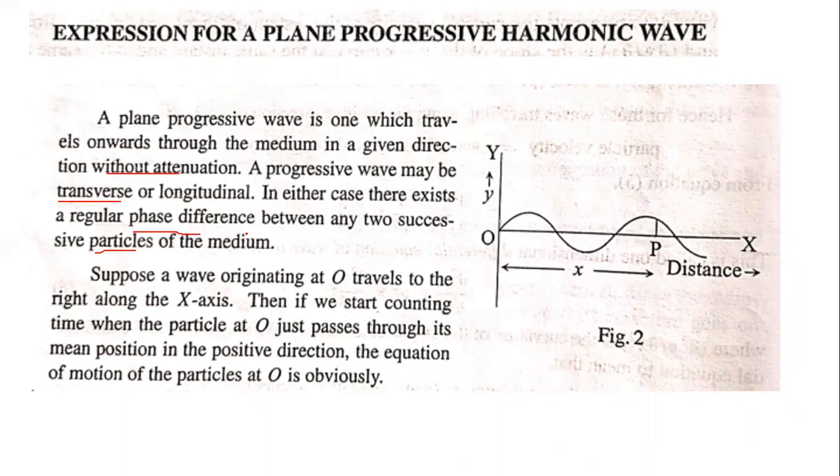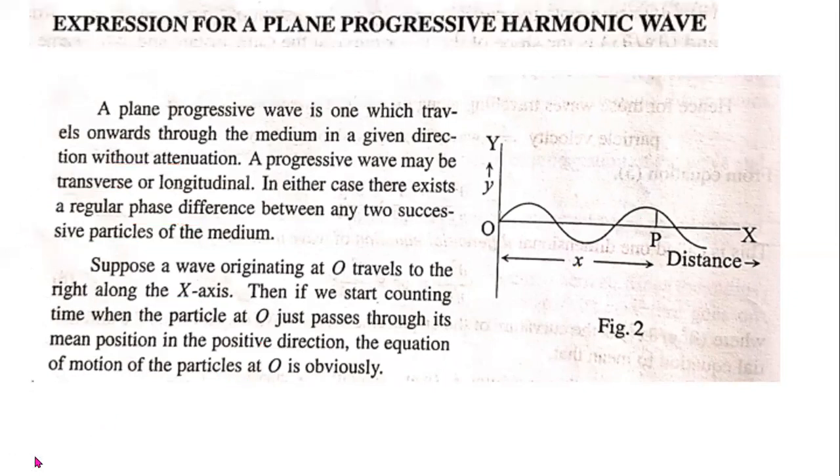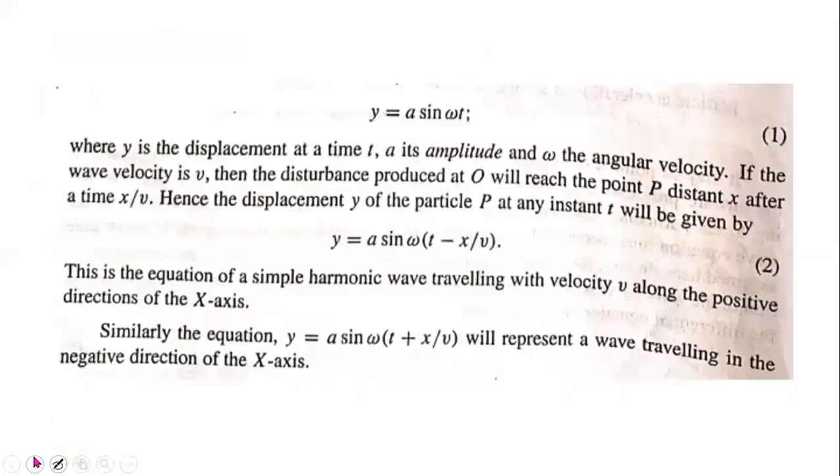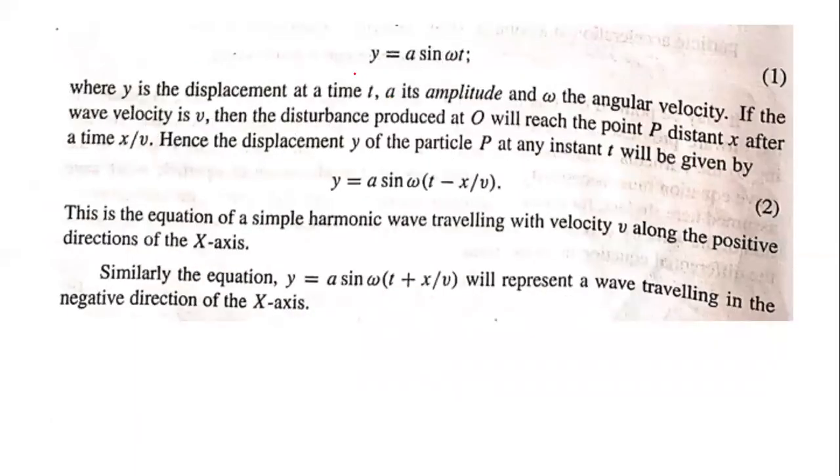The wave originating at O travels to the right along the x-axis. If we start counting time when the particle at O just passes through its mean position in the positive direction, the equation of motion of the particle can be written as y equals a sin omega t.